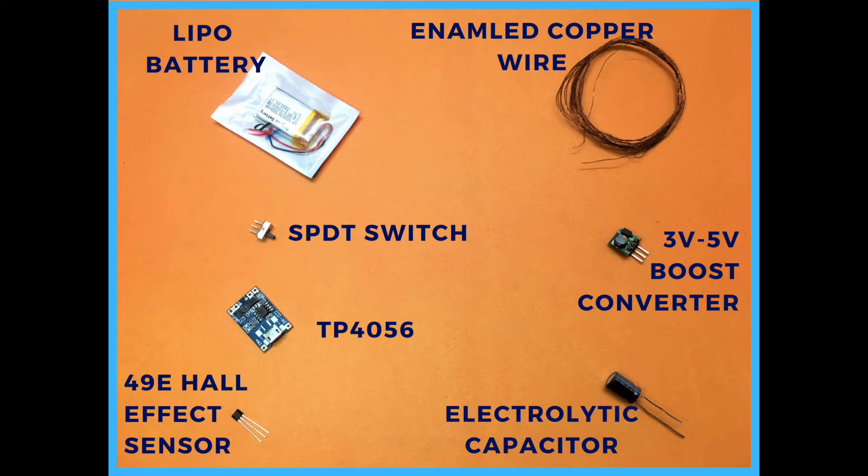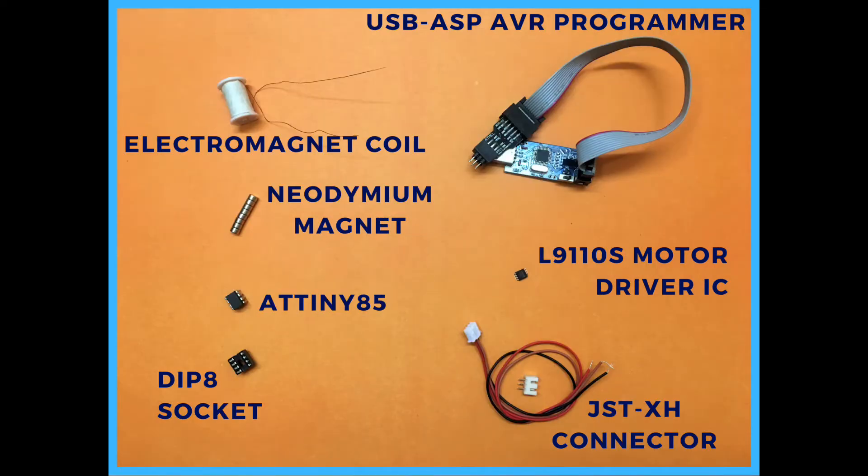You'll also need enameled copper wire, a 3 volt to 5 volt boost converter, electrolytic capacitor, electromagnetic coil, neodymium magnets, ATtiny85 microcontroller, DIP socket, USB ASP AVR programmer, and L293D motor driver IC.